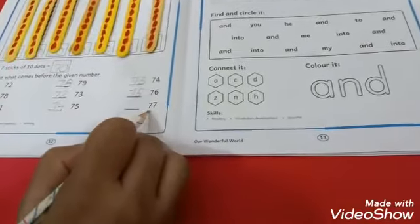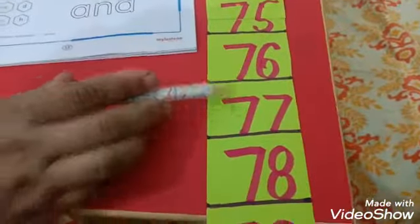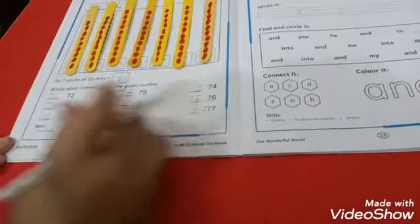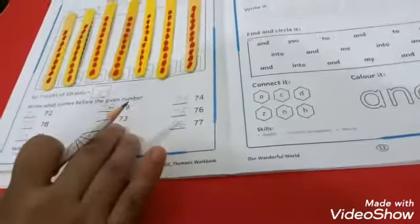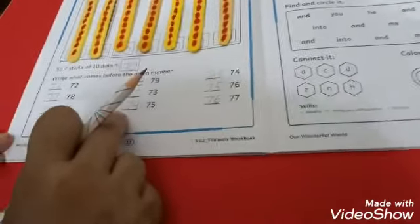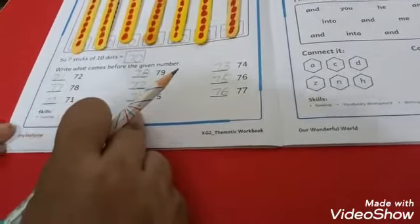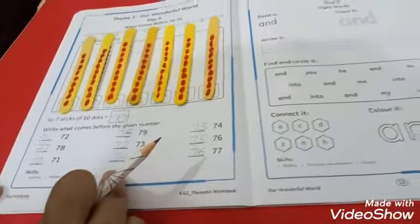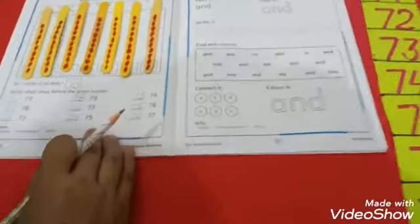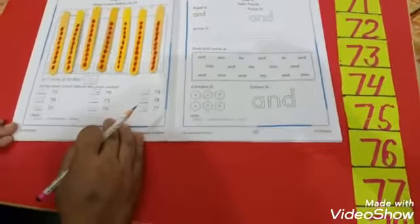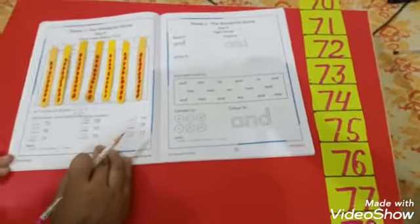Now last number is 77. Which number comes before 77? It's 76. तो ये अब आपको पूरा पेज अपने आप करना है। ये वीडियो की हेल्प से और घर से बाहर बिल्कुल भी नहीं निकलना। हम 10s और 1s के बारे में और भी बहुत कुछ पढ़ेंगे in the next class. Till then, bye bye.